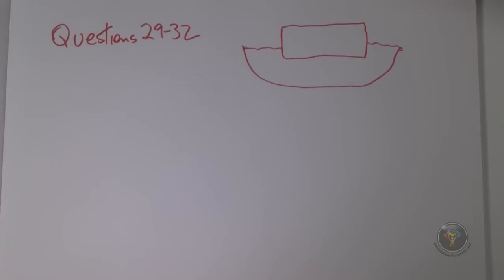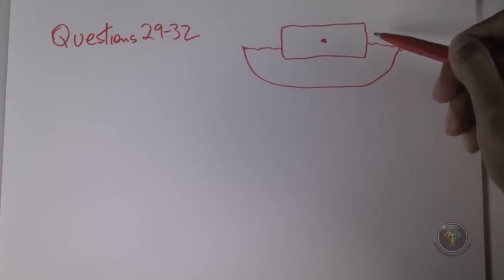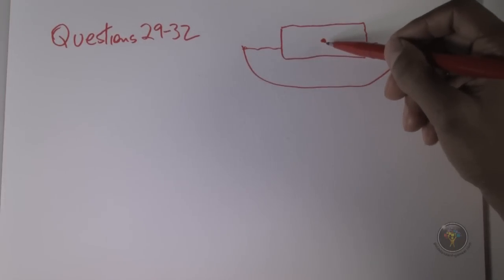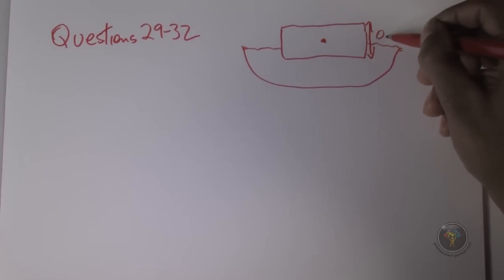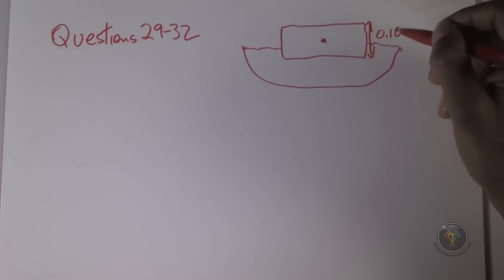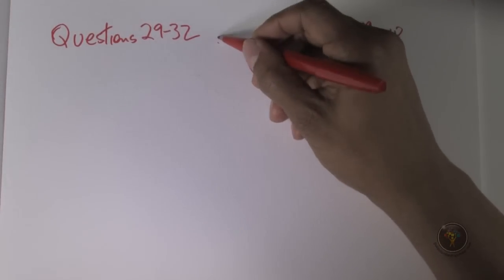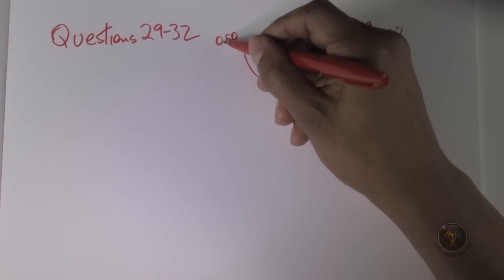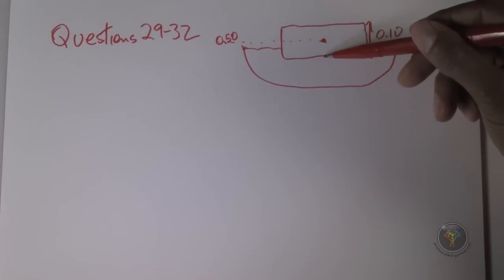What is the vertical distance between the center of mass and the center of buoyancy for the log? We know where the center of mass of the log is because it's uniform — it's in the center of the log. This length is 0.1 meters, so the center of mass is at 0.05 meters.